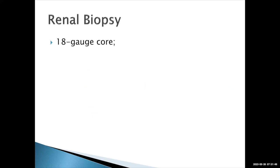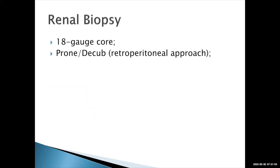We use an 18-gauge core biopsy needle for renal biopsies, doing them in prone or decubitus position. We always want to stay retroperitoneal when doing a renal biopsy — the kidneys are retroperitoneal organs, and if there is a bleed, it's better to bleed in the retroperitoneal compartment, which is a confined space that will generally tamponade the hemorrhage. If biopsying a renal mass, the retroperitoneal approach keeps the entire process in one compartment, which is important if you're concerned about seeding of renal cell carcinoma.